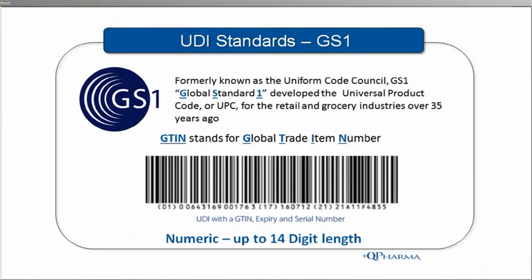GS1, or Global Standard One, was formerly known as the Uniform Code Council, or UCC, and they developed the Universal Product Code, or UPC, that was first used in retail over 35 years ago. GS1's GTIN, or Global Trade Item Number, is a fixed-length numeric code that can have up to 14 digits.